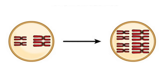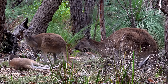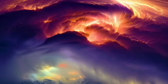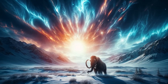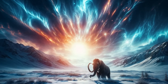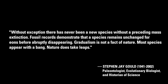What evidence do we have for this innate action of chromosomes to switch to polyploidy? In the plant, insect and fish world, we have many examples. But in the world of mammals — our human world — it is in dispute. In recent history, no catastrophic event has been witnessed that could stimulate this process. In extreme circumstances, could mammals too have an inbuilt emergency adaptation? Harvard paleontologist Stephen Gould notes: 'Without exception, there has never been a new species without a preceding mass extinction. Fossil records demonstrate that a species remains unchanged for eons before abruptly disappearing. Gradualism is not a fact of nature. Most species appear with a bang. Nature does take leaps.'